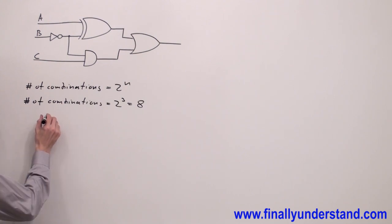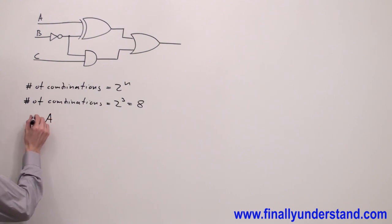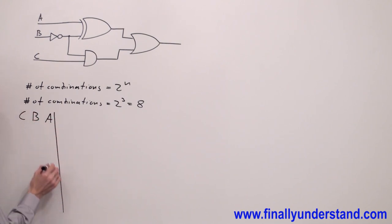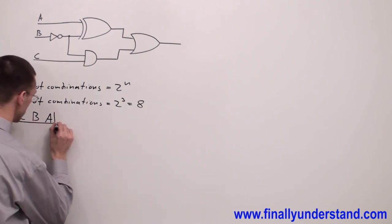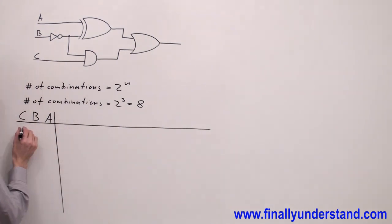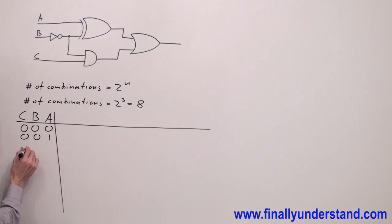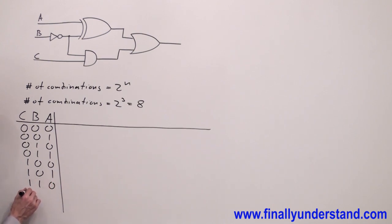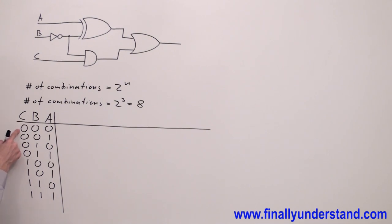We're going to have eight combinations on the input. That's why I'm going to write the table. I'm going to have three variables — A, B, C — and I'm supposed to write eight combinations: binary zero through binary seven. Including zero, from zero to seven, we have eight combinations.